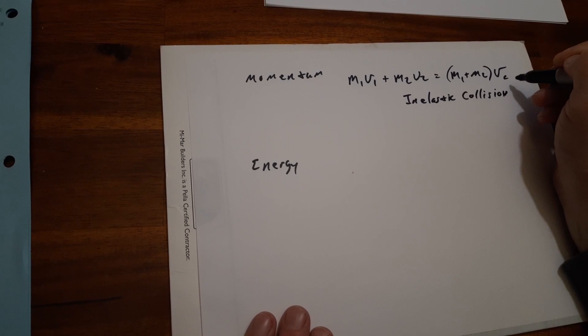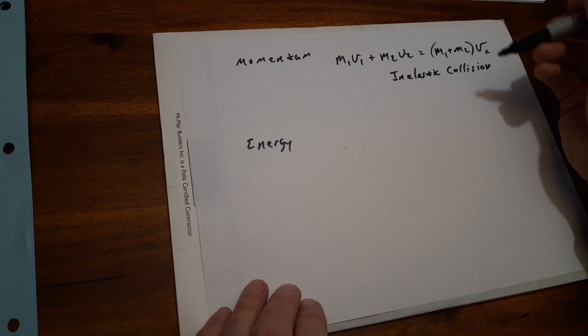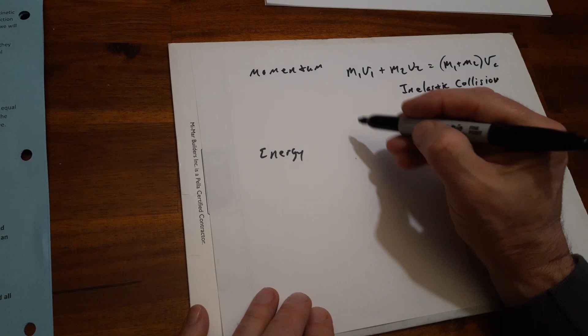Let's go to the energy here. With our energy we have two energy equations: kinetic energy and potential energy. Kinetic energy is one-half mass times velocity squared. Potential energy is MGH.